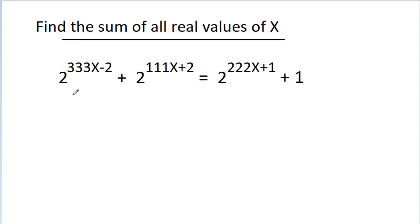In this video, we have given that 2 power 333x minus 2 minus 2 power 100 ln(x minus 2) is equal to 2 power 222x minus 1 minus 1, and we have to find the sum of all real values of x.